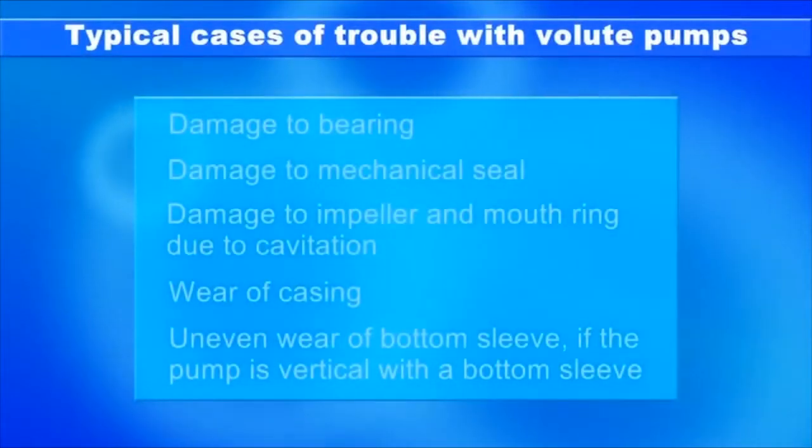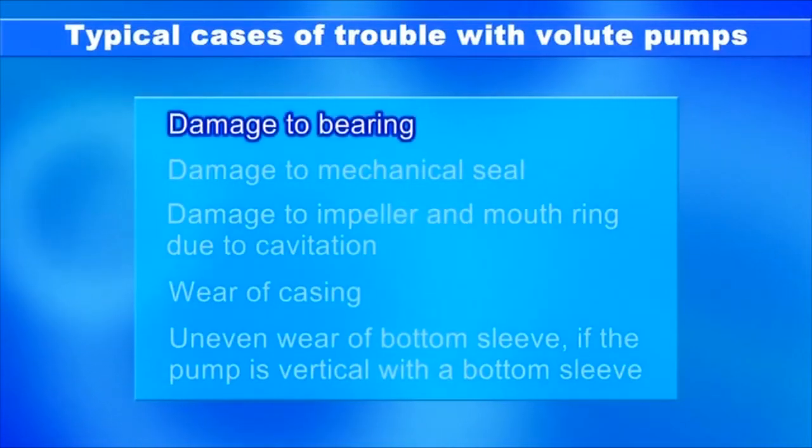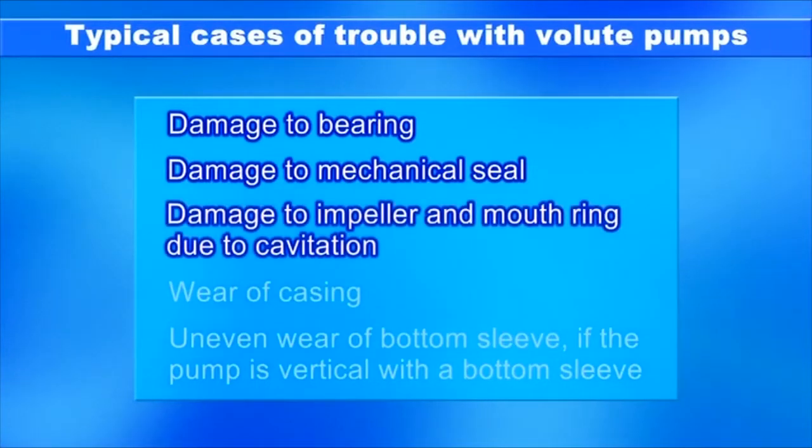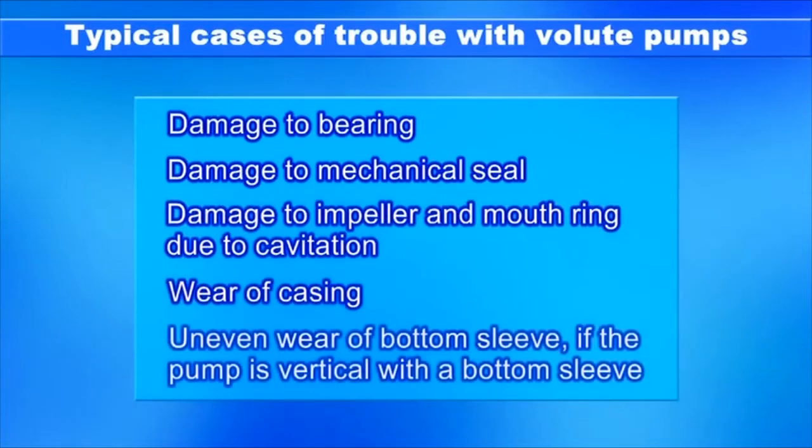The following volute pump cases of trouble have been reported: damage to the bearing, damage to the mechanical seal, damage to the impeller and mouth ring due to cavitation, wear of the casing, and uneven wear of the bottom sleeve if the pump is vertical with a bottom sleeve.